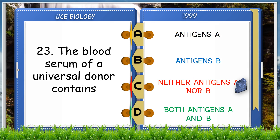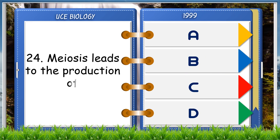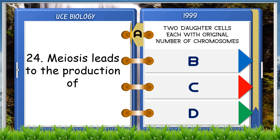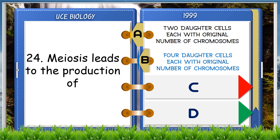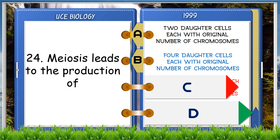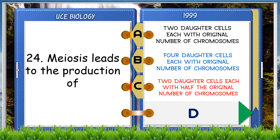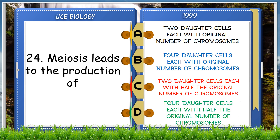What is the result of meiosis? A. Two daughter cells each with the original number of chromosomes, B. Four daughter cells each with the original number of chromosomes, C. Two daughter cells each with half the original number of chromosomes, D. Four daughter cells each with half the original number of chromosomes. The answer is D, four daughter cells each with half the original number of chromosomes.